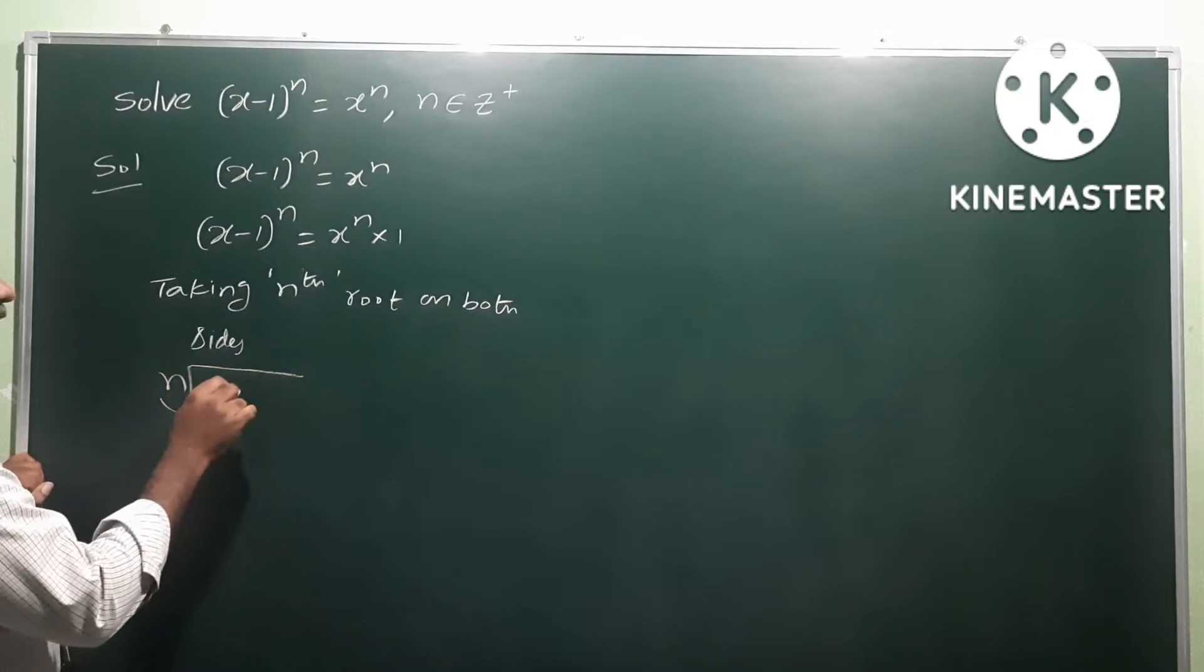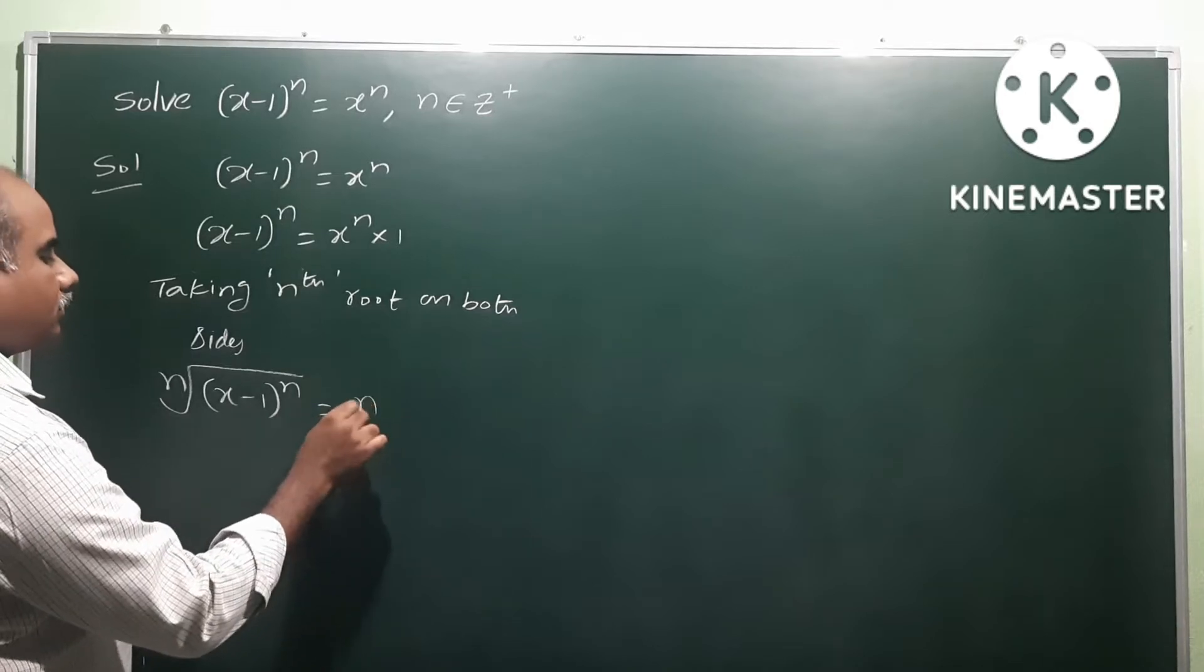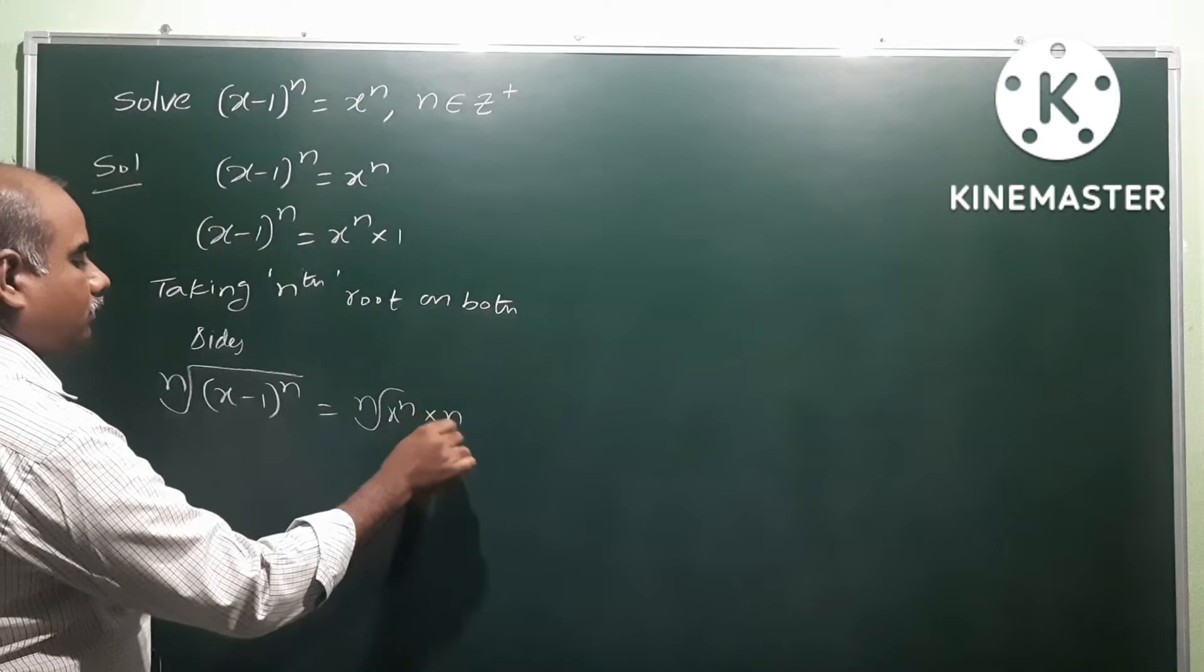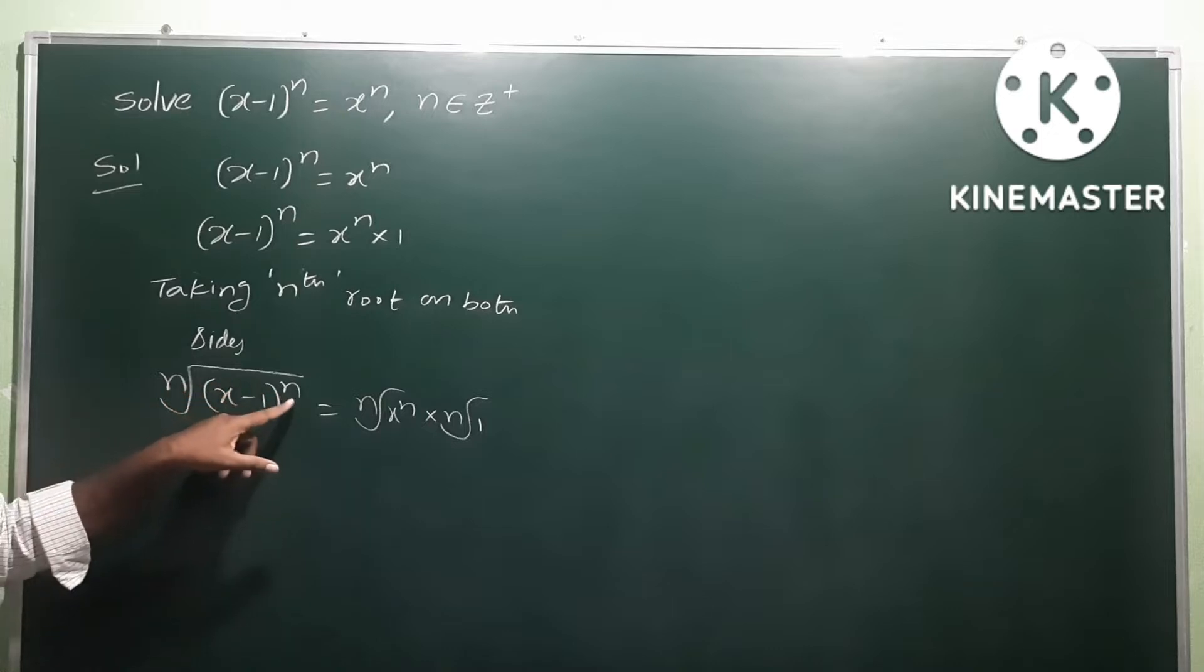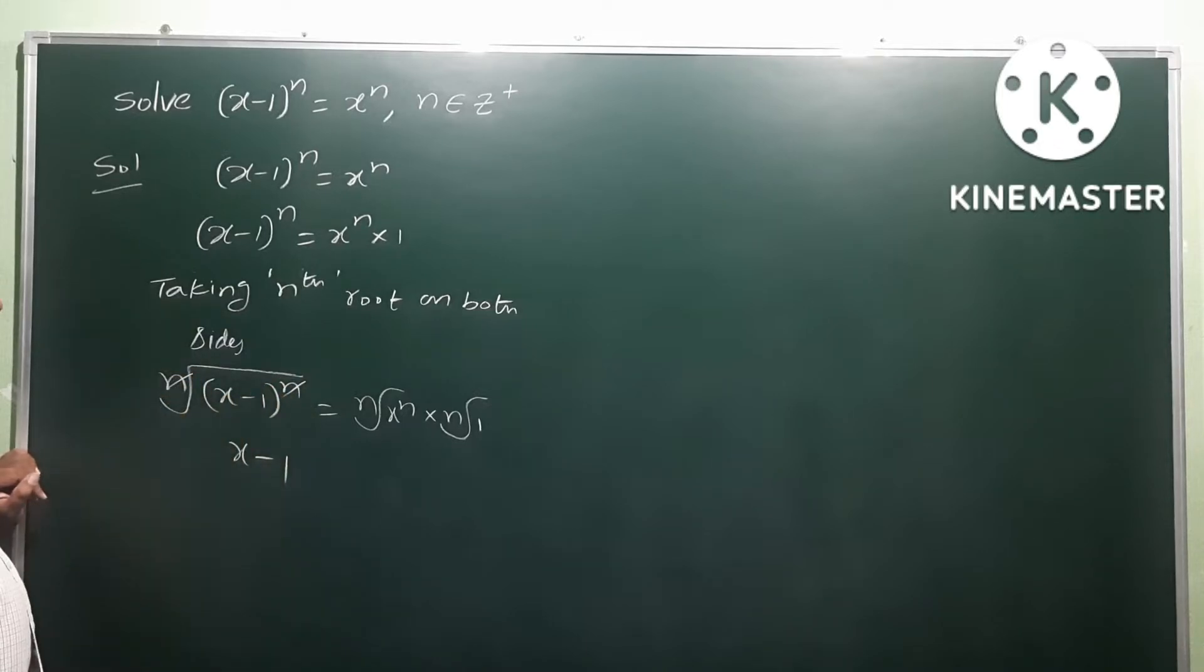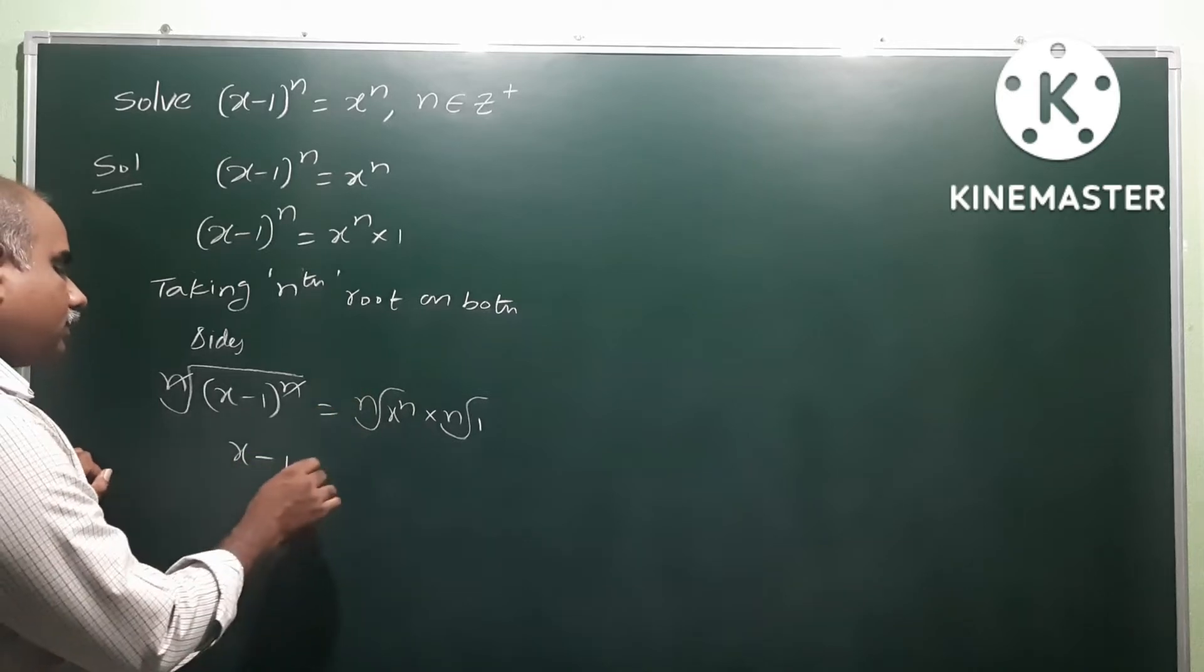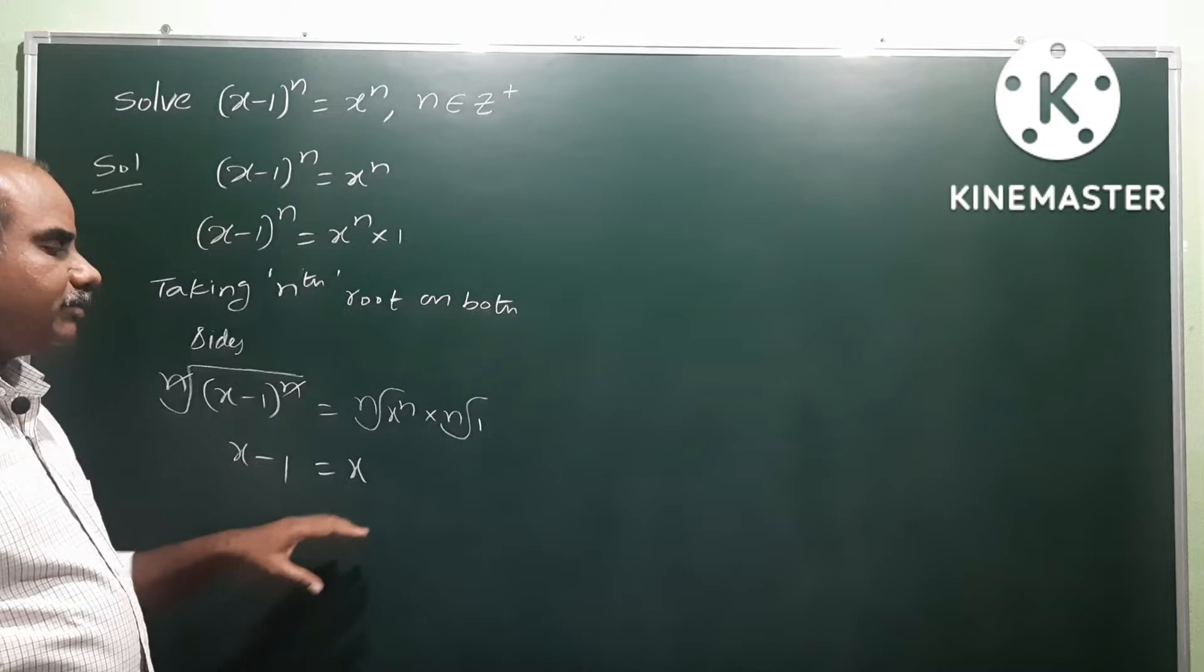The nth root and power n are the same, so they cancel. We get x-1 on the left side. These two are cancelled if they are the same. That equals x times nth root of 1, which means 1^(1/n).